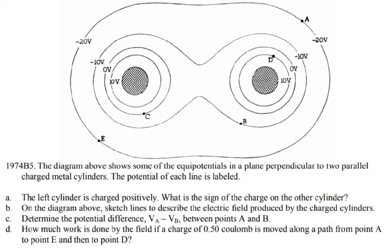This question is from 1974 AP Physics B, and now these topics are covered in AP Physics 2. In this question, the diagram shows some of the equipotentials in the plane perpendicular to two parallel charged metal cylinders. The potential of each line is labeled. The left cylinder is charged positively. What is the sign of the charge on the other cylinder?